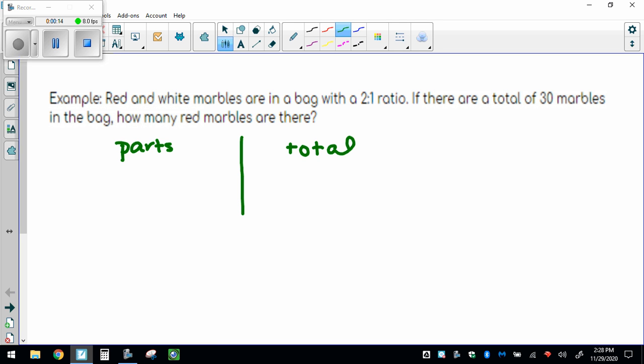So I know that they're red and white, so there's two parts red to one part white. And remember, if you add them together you get the total number of parts, so in this case 2 plus 1 gives us 3.